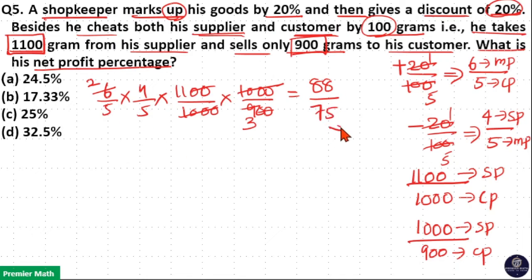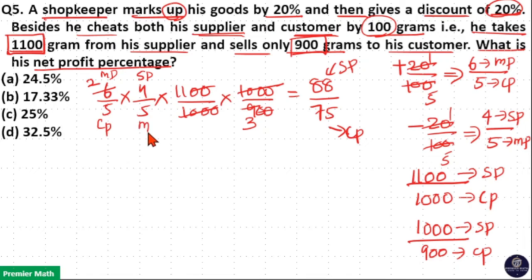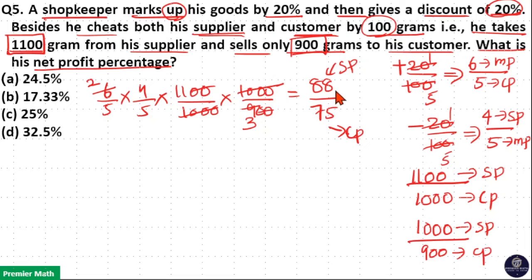You can see this is cost price and this is selling price. The first ratio is marked price upon cost price, the second is selling price upon marked price — the marked price cancels, so we are left with selling price over cost price. Numerator is selling price = 88, denominator is cost price = 75. The difference between selling price and cost price is 88 minus 75, that is 13 parts.